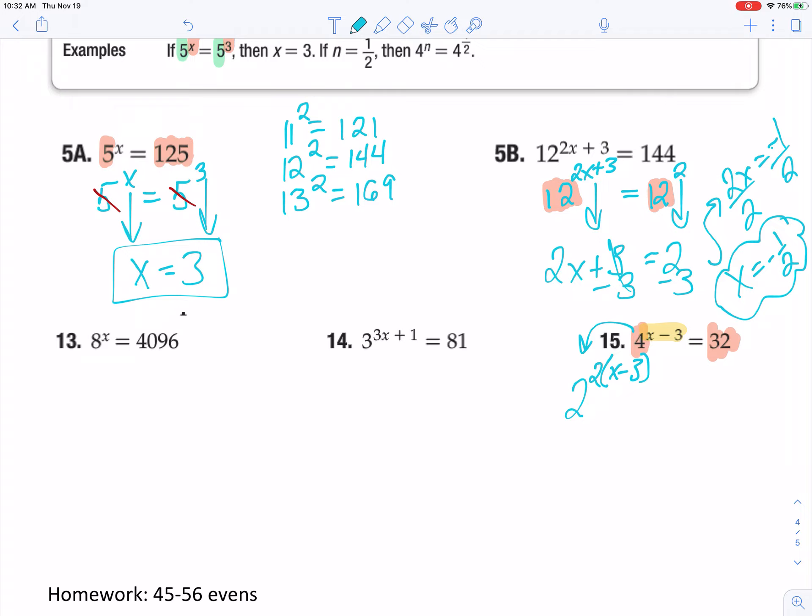Okay. Now, 32. 2 to what power gives me 32? I believe this one's on your power's pocket guide. But if not, just kind of type in your calculator. 2 to the, you know, 2 squared is 4. 2 to the 3rd. 2 to the 4th. 2 to the 5th. Ah, there it is. 2 to the 5th equals 32.